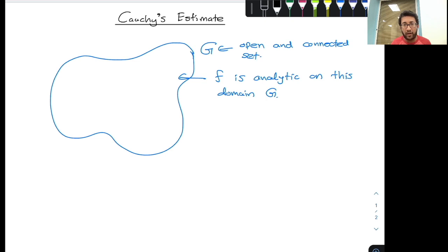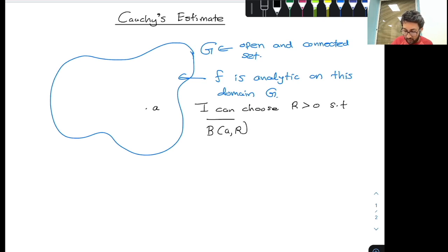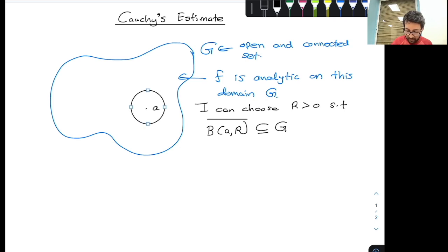Now I choose any arbitrary point, call it A. It can be any point on this domain G. Since this domain G is open and connected, I can choose capital R which is greater than zero, such that B(A, R) closure — that means the closed ball whose center is A and radius is capital R — is lying inside my domain G.